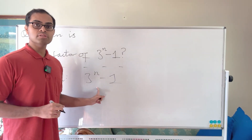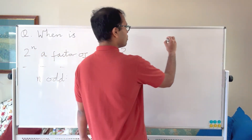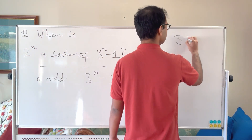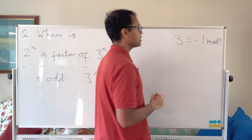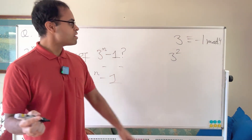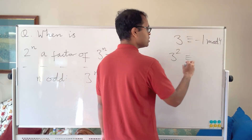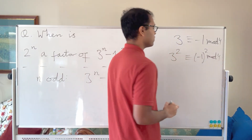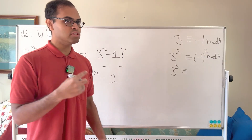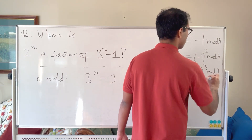Using modular arithmetic: 3 is congruent to −1 mod 4. When you take powers, 3^n is congruent to (−1)^n mod 4. You can verify: 3^2 = 9 has remainder 1 mod 4, consistent with (−1)^2 = 1. And 3^3 = 27 has remainder 3, or equivalently −1, consistent with (−1)^3 = −1.